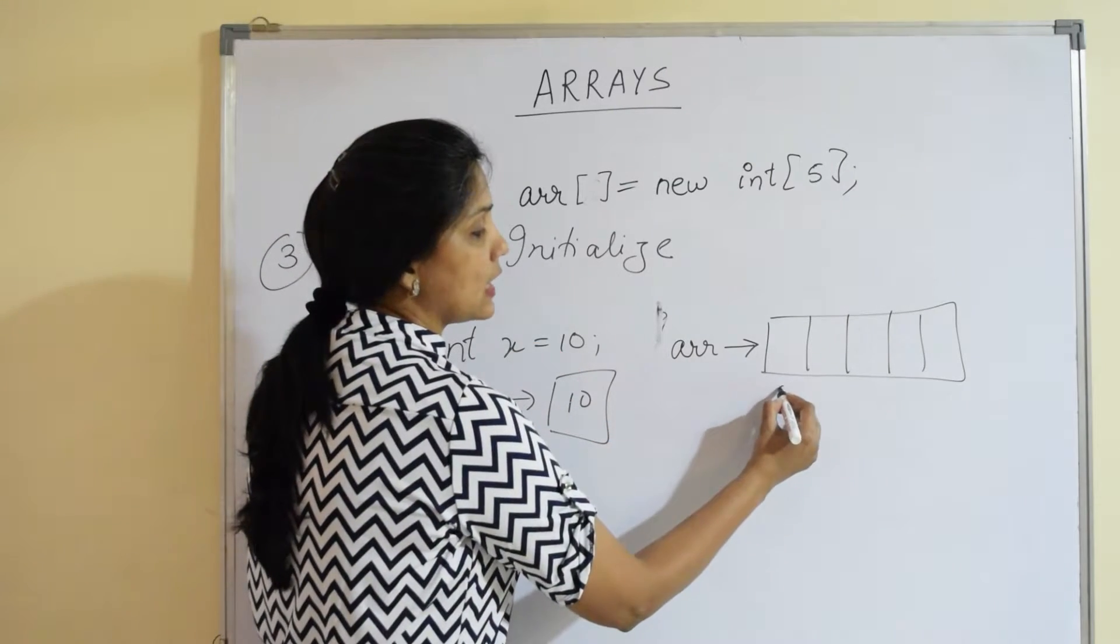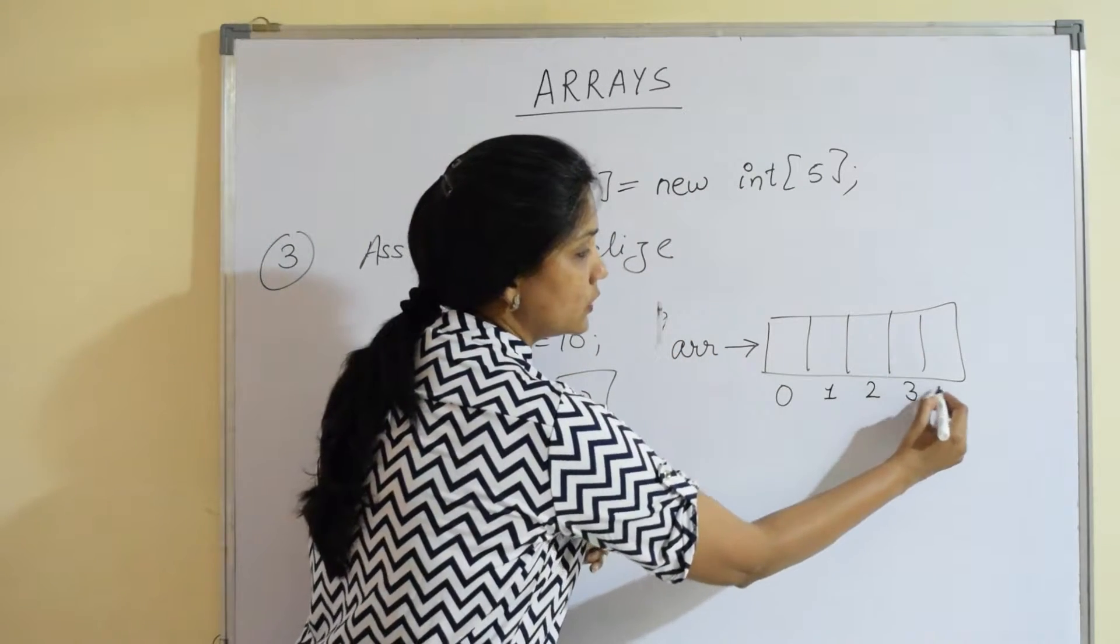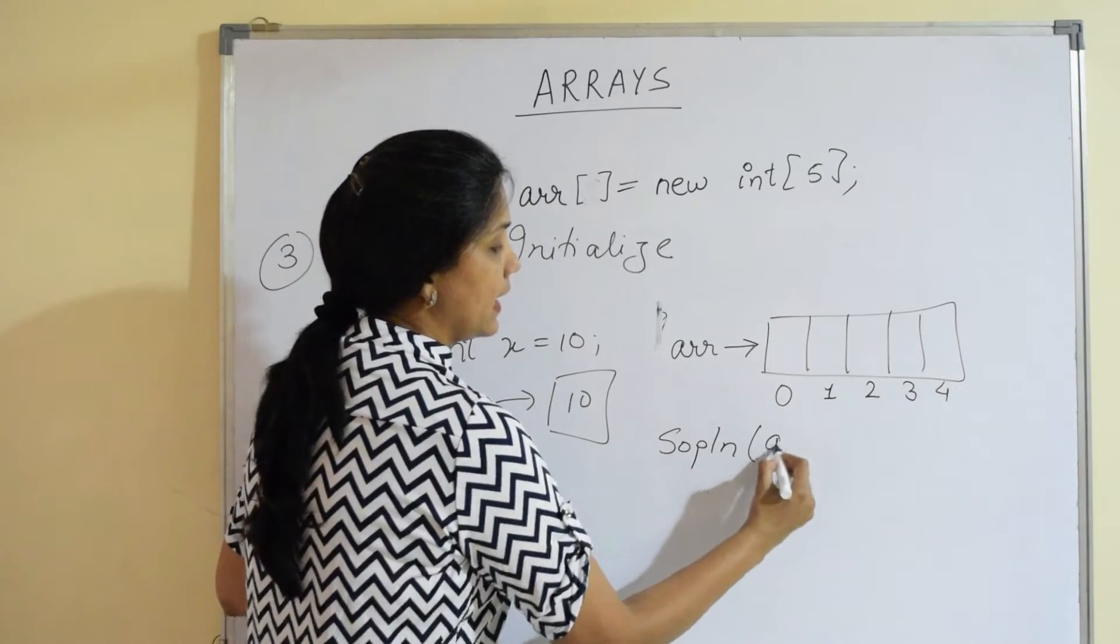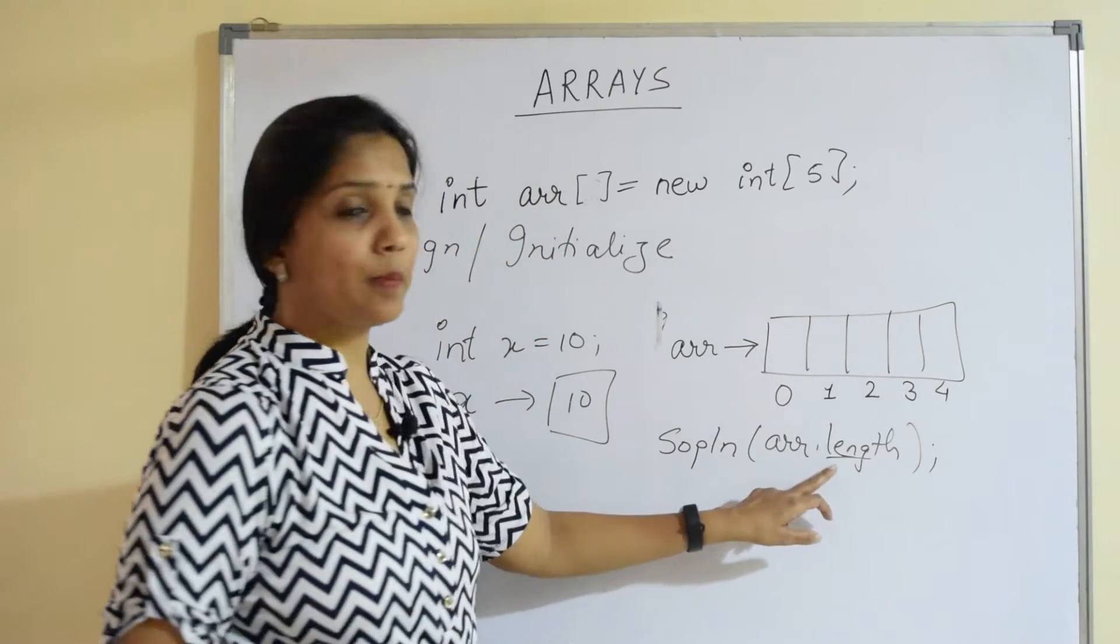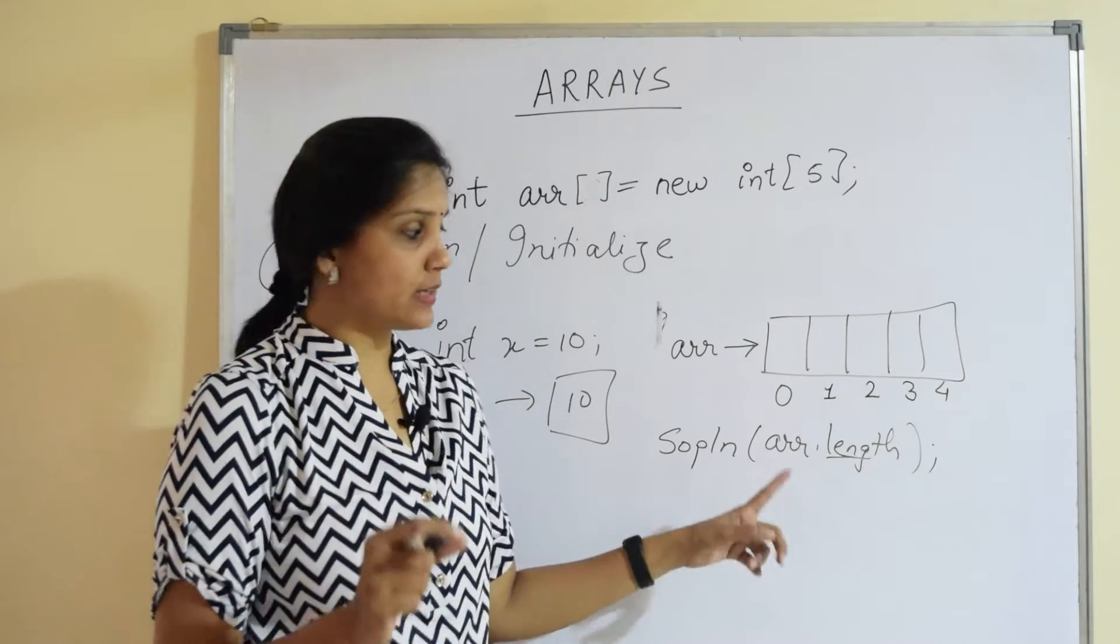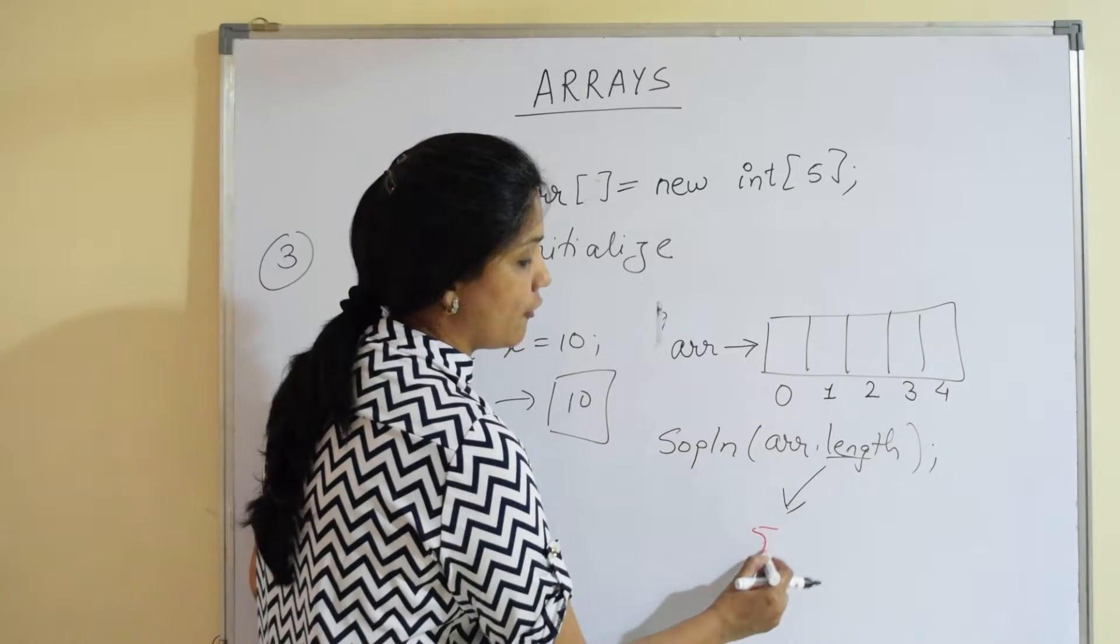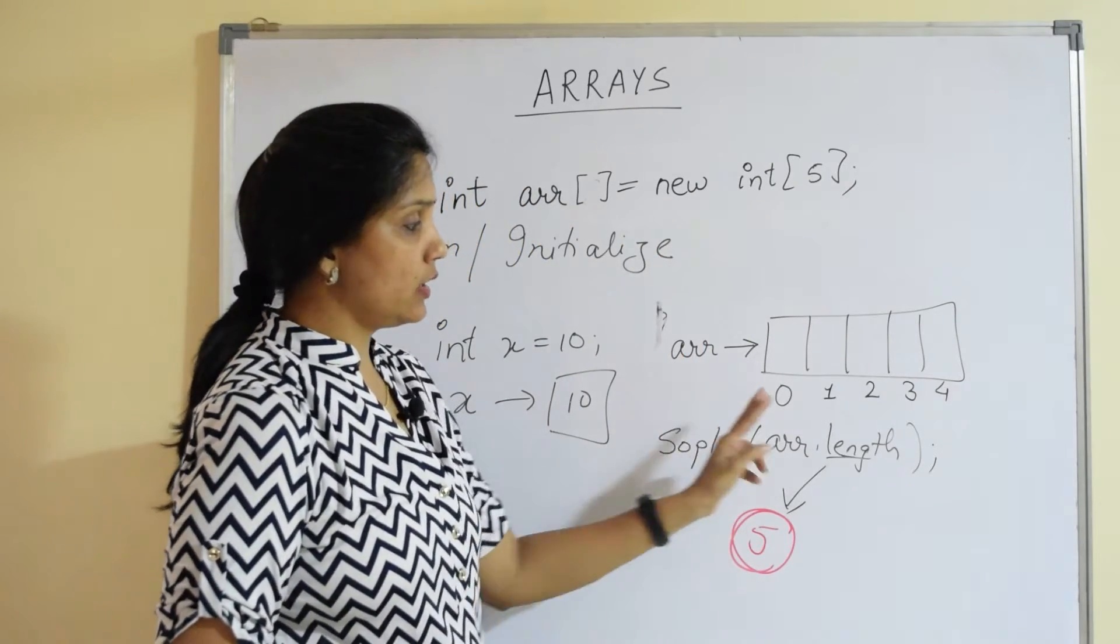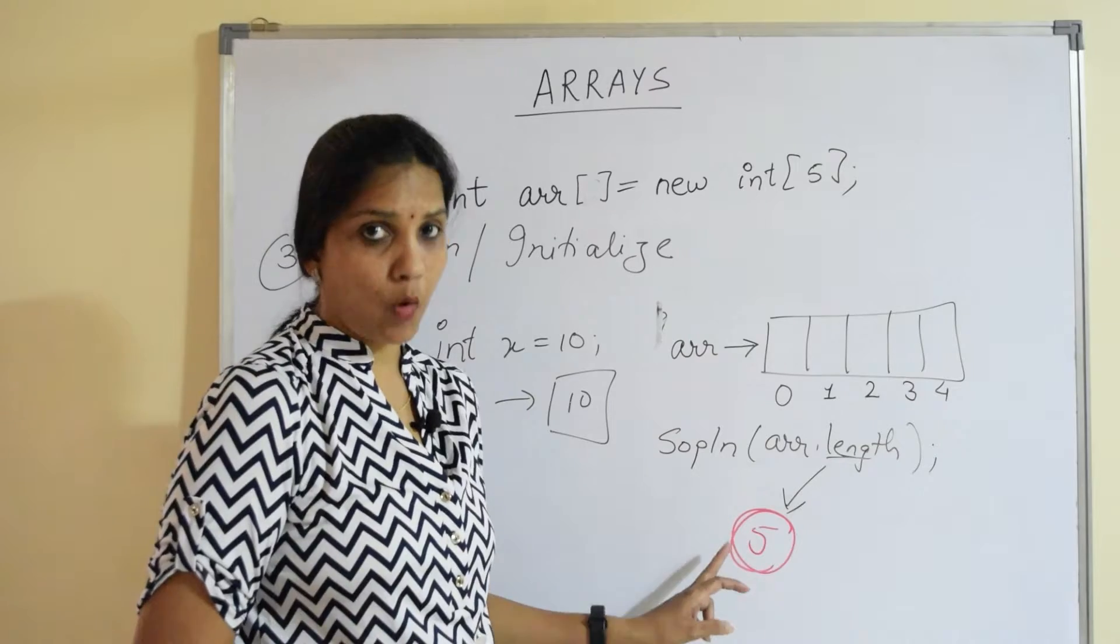So arrays work extensively on indexes. Indexes always start with zero and if an array can store five elements, I go till one, two, three and four. So if I just go ahead and say print arr dot length, length is again a special property in the arrays which helps me to find out the number of elements an array can hold. And remember this length gives me five. So it gives me the number of elements an array can store. It does not give me the last index of the element. This is very, very important.